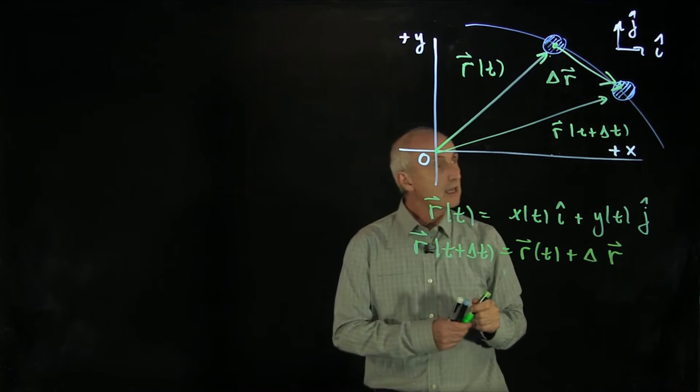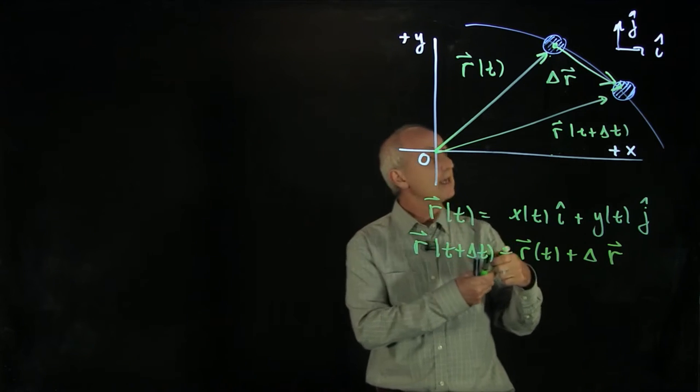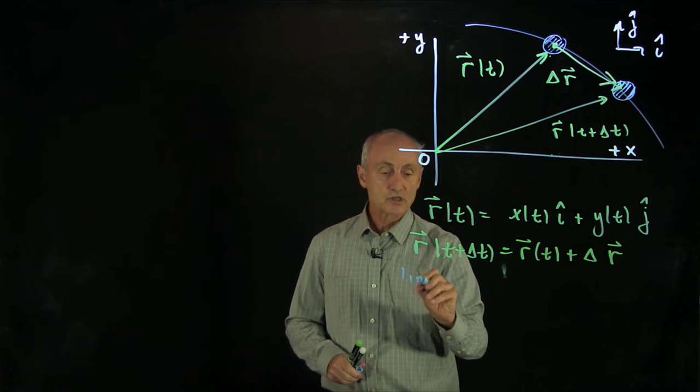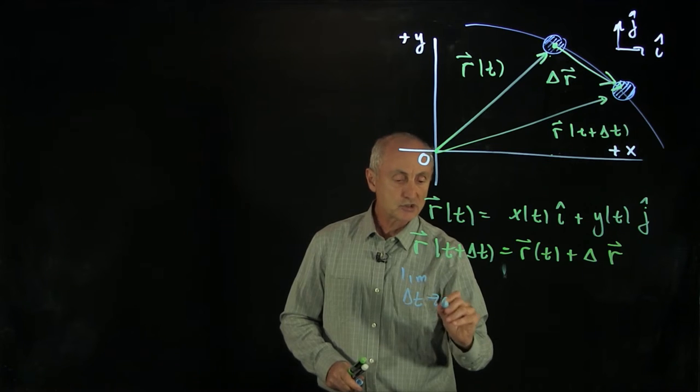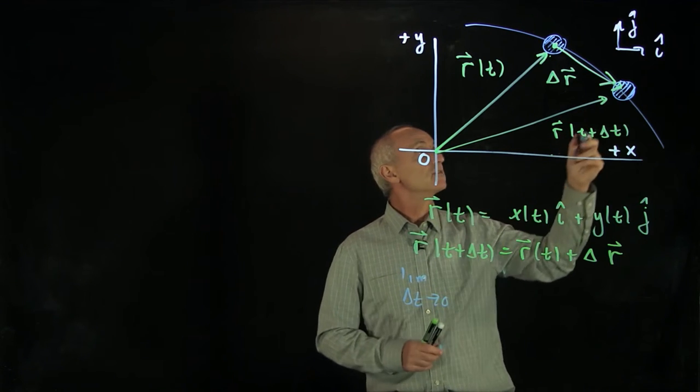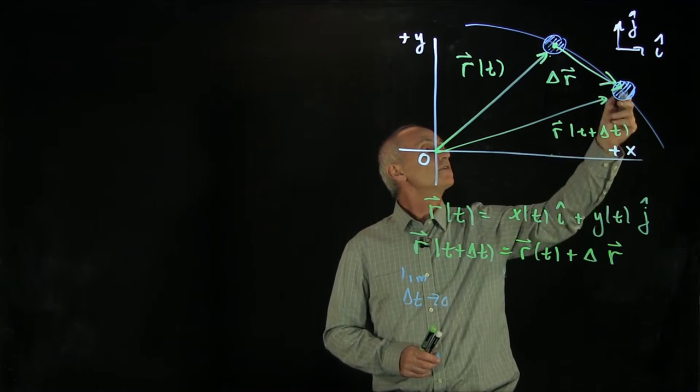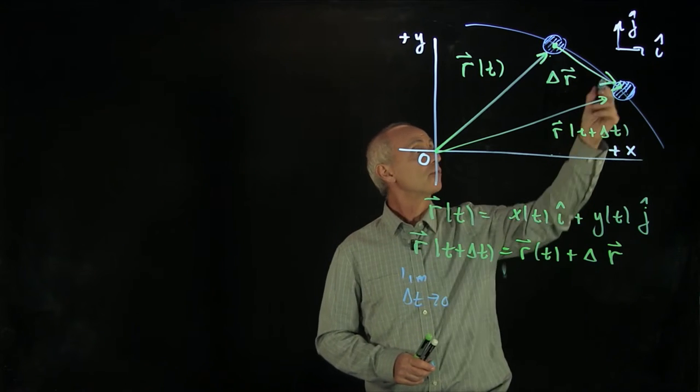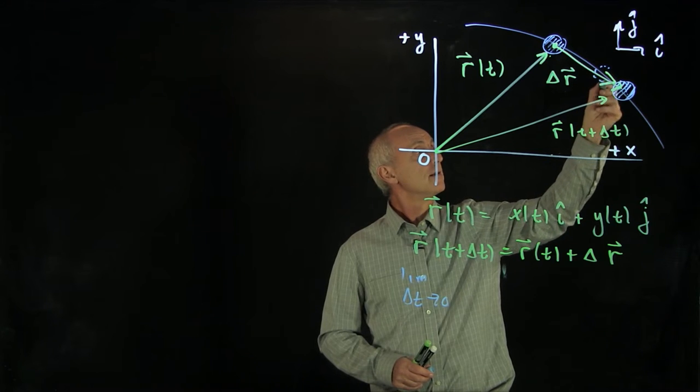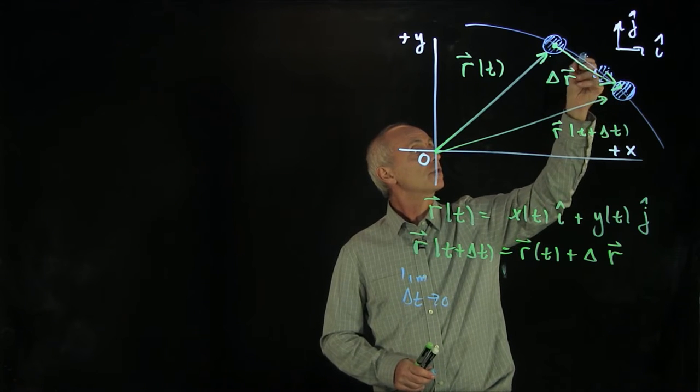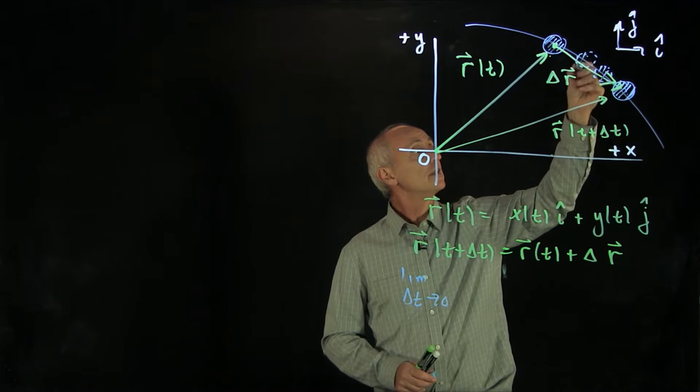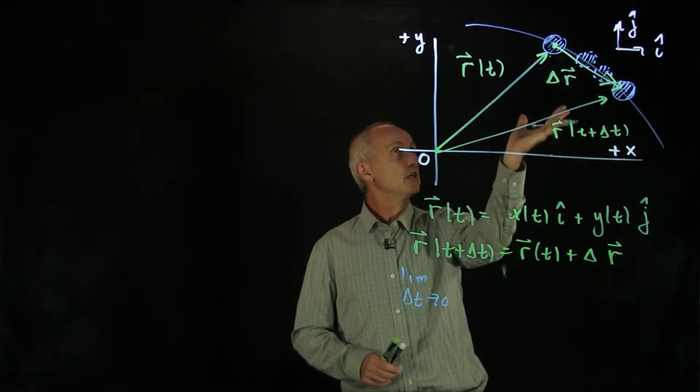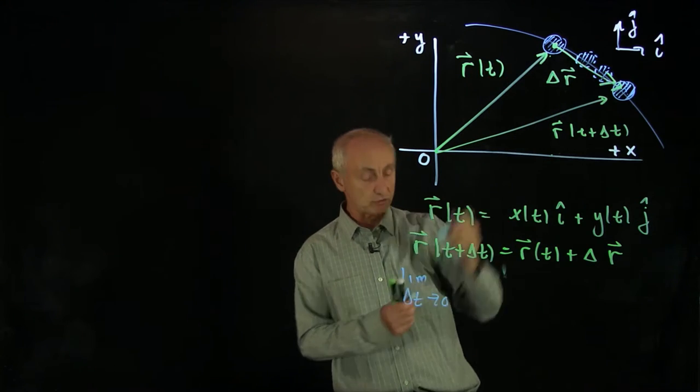Now what we want to consider is a limit as delta t goes to 0. Let's just look graphically at what that means. As we move this delta t, as delta t gets smaller and smaller, our object is getting closer and closer to its position at time t. The position vector r of t plus delta t is getting closer and closer to r of t.